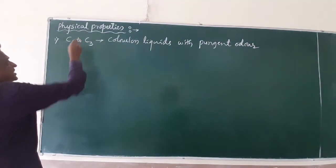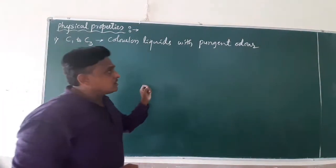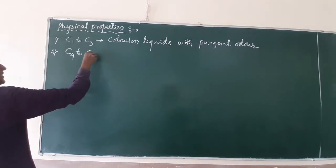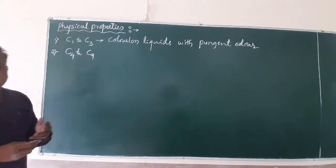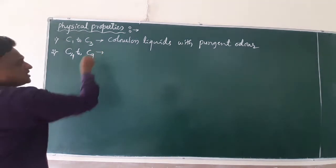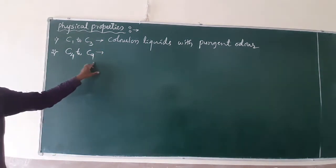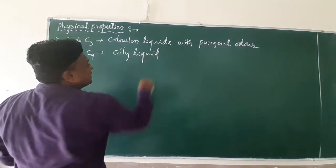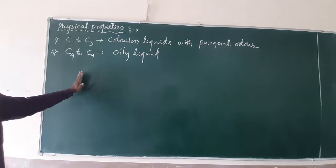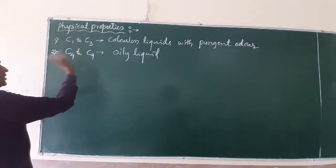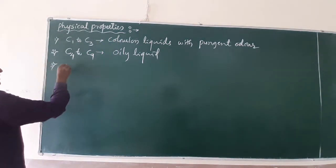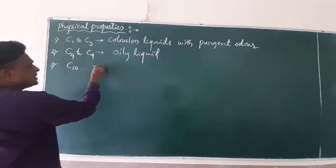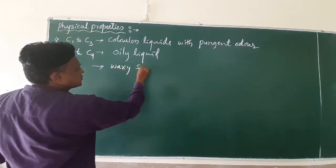Formic acid, acetic acid, and propionic acids are colorless liquids with pungent odor. The next group, C4 to C9, meaning butanoic acid onwards, they are oily liquids. And more than this — C10 onwards — they are available as waxy solids.